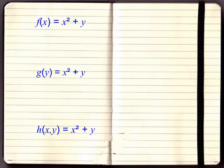We have three functions in front of us: f, g and h, and they have the same right hand sides x squared plus y. Now we have a question: Are f, g and h the same because their right hand sides are the same?